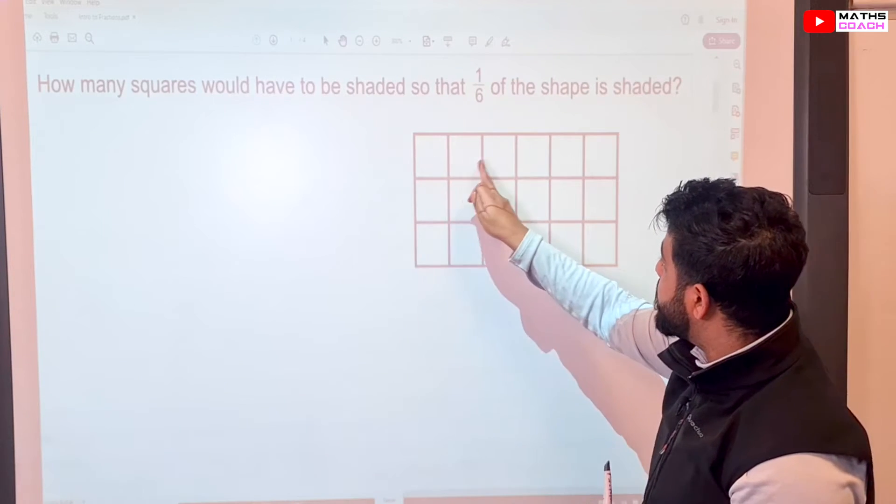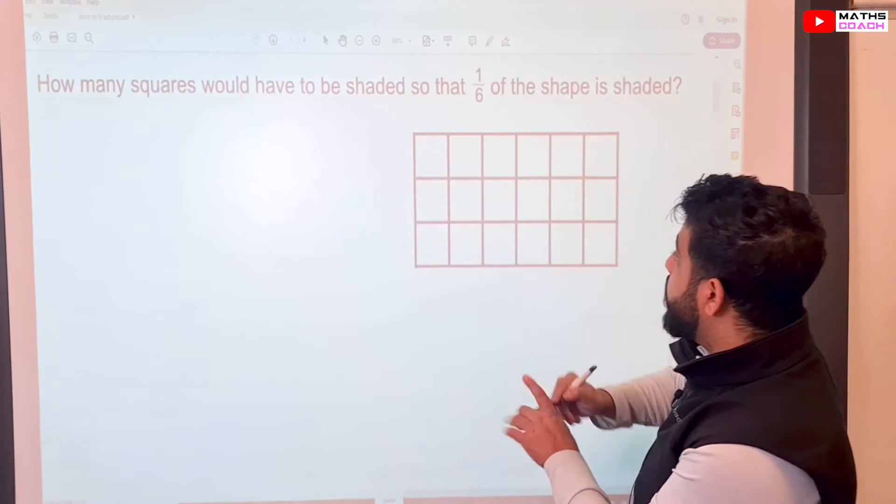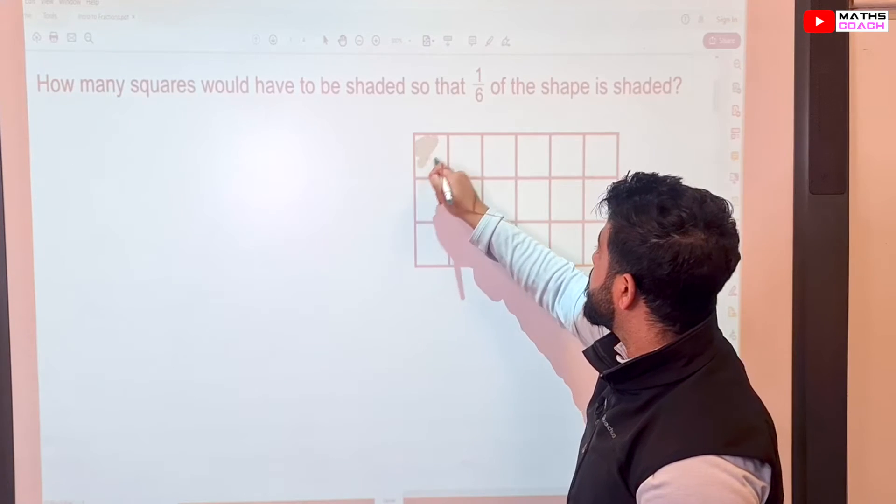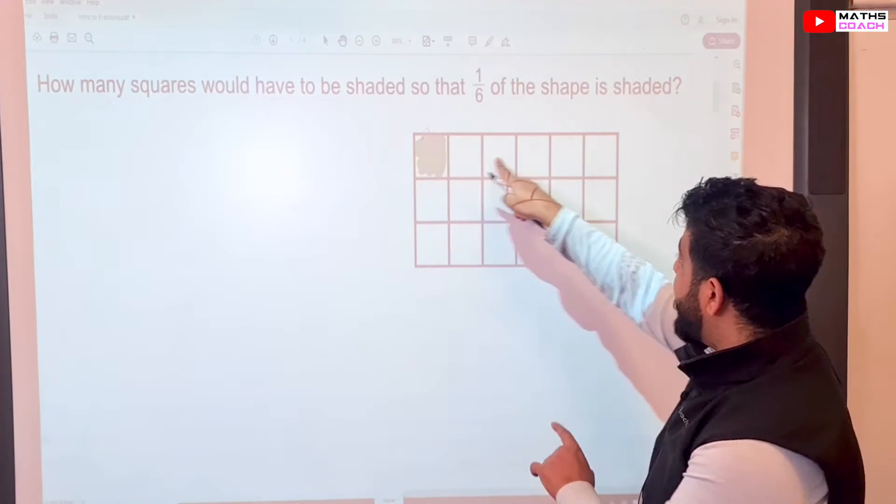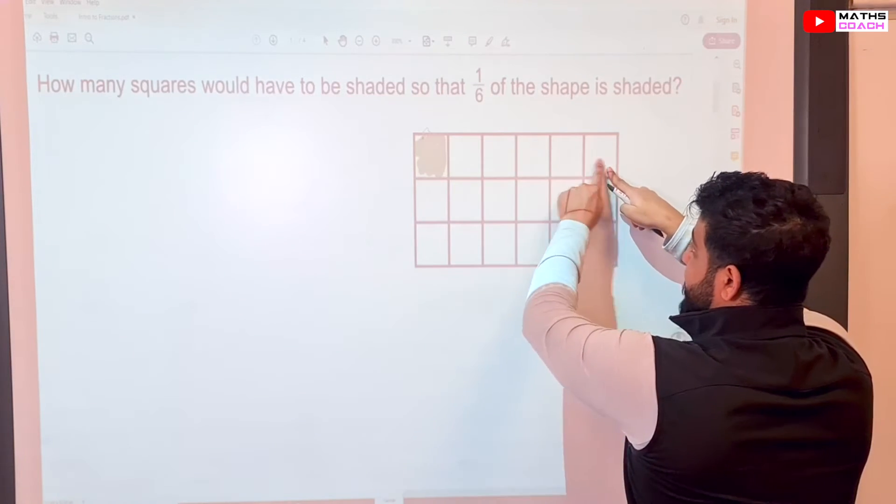So here, we had one, two, three, four, five, six. We can just shade in one of those. So for every time we see six squares, we will shade one. So we've done that. So for every six, we shaded one.